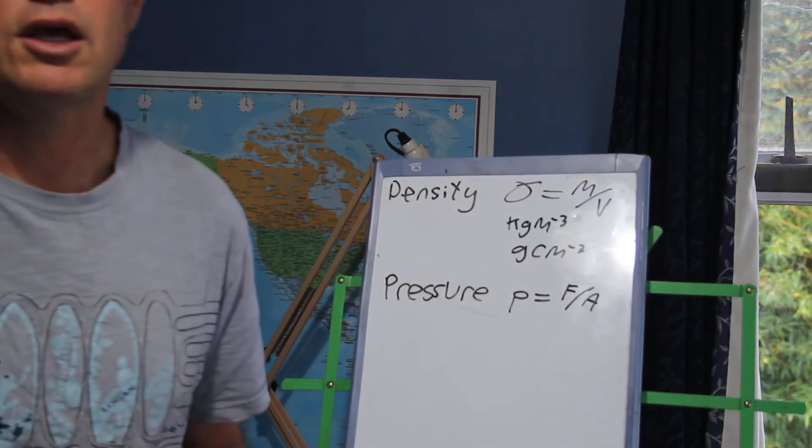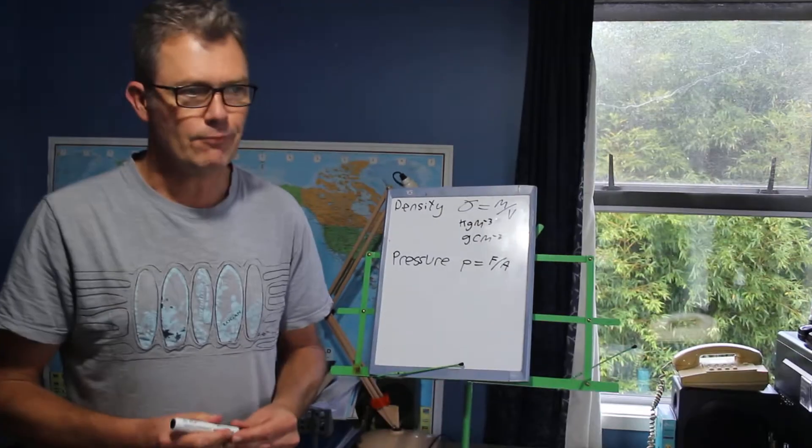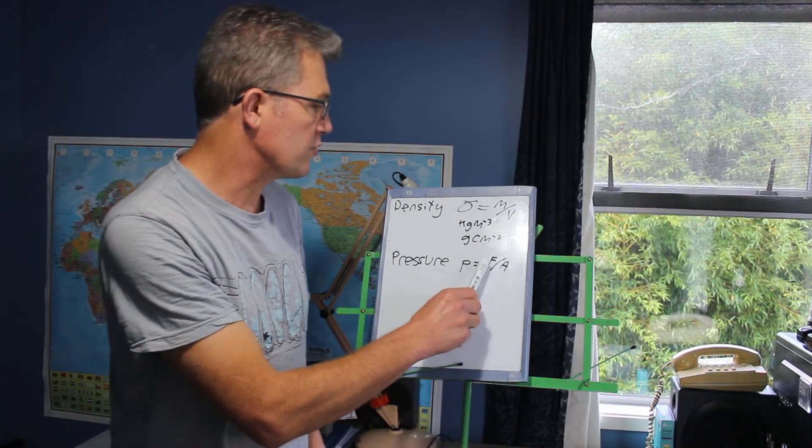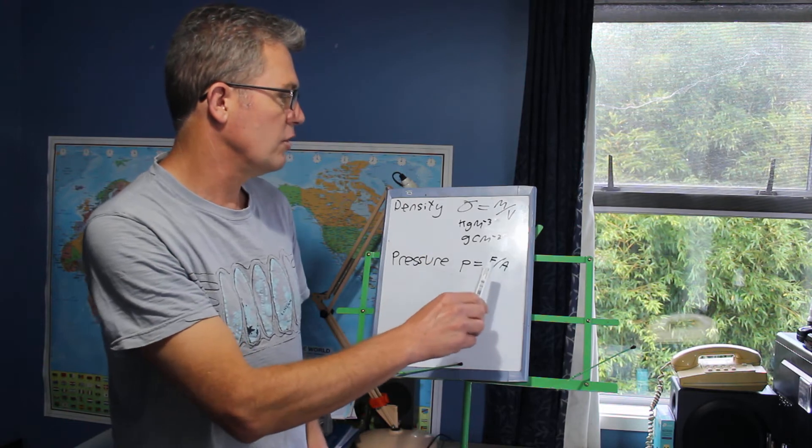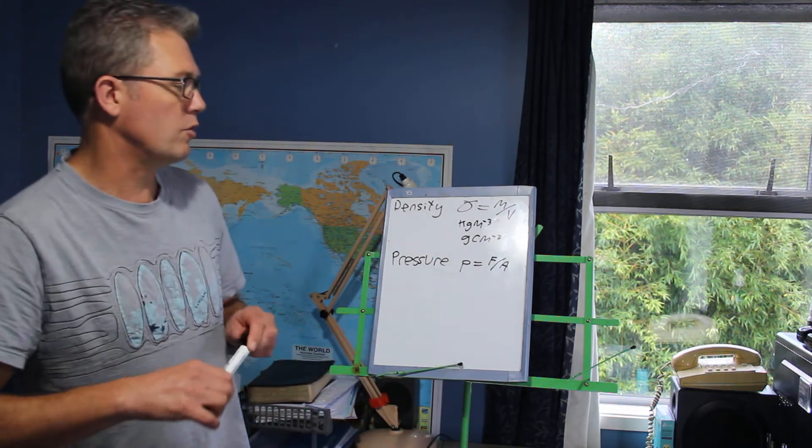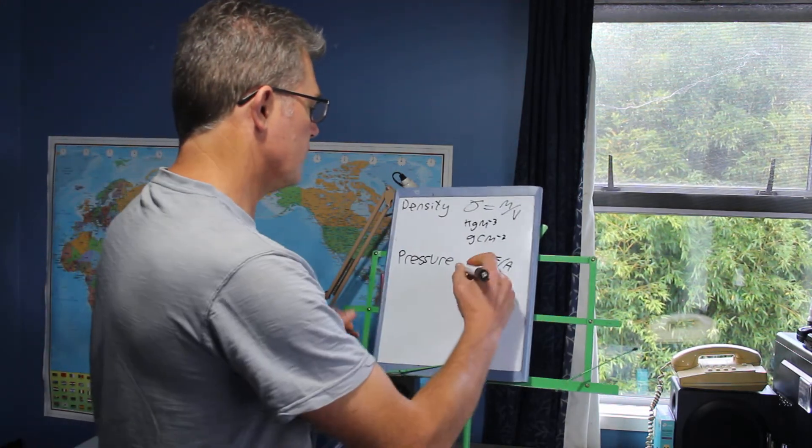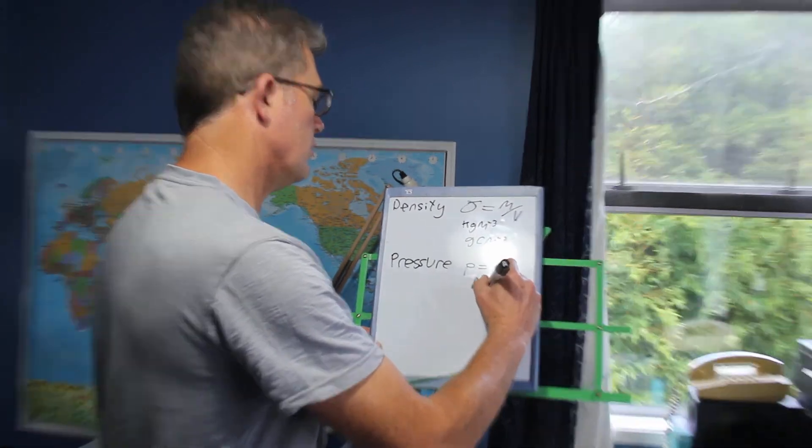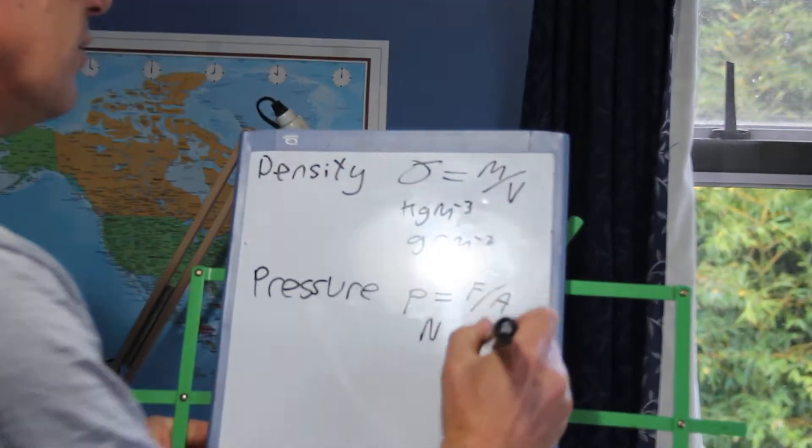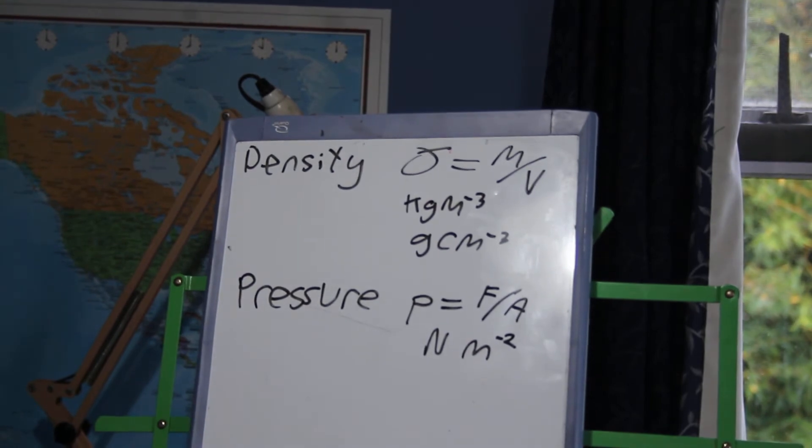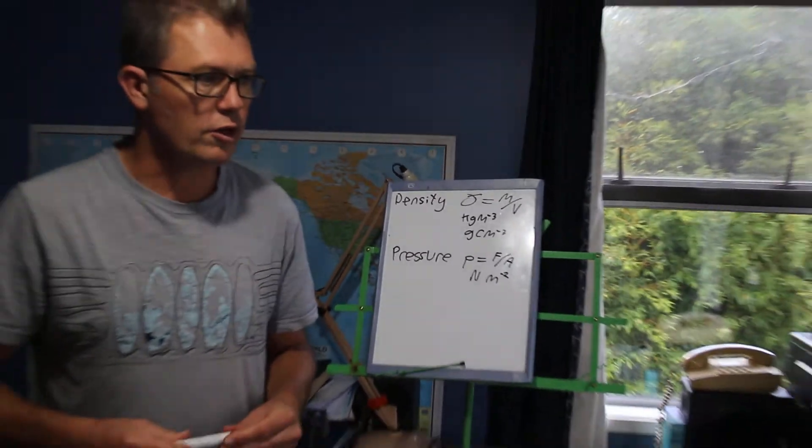So what does that really look like in real life? Well, hang on. To start with, let's say what are the units going to be? Units will be newtons per square metre. So we'd write it as newtons metres to minus two. Newtons per square metre. So what does pressure look like in real life?